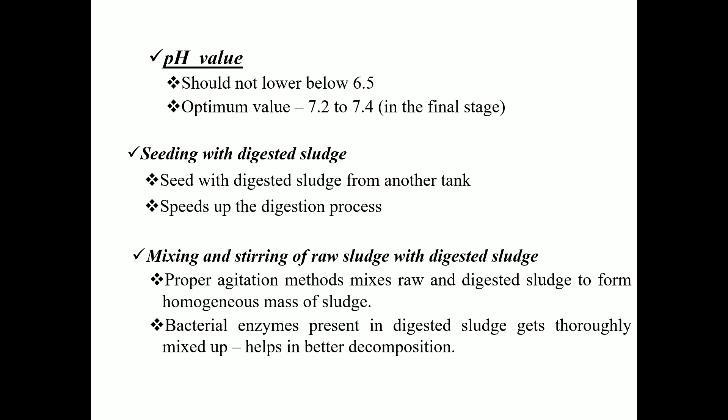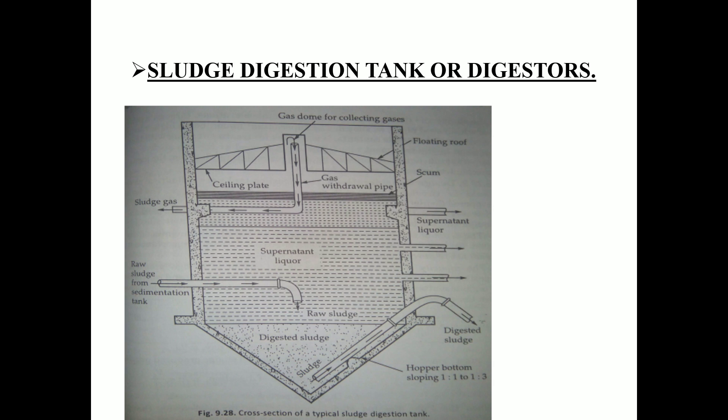The fourth factor is seeding with digested sludge. Already digested sludge is added to fresh raw sludge. The mixture creates a homogeneous mass of sludge, and the bacteria from the digested sludge accelerate decomposition of the fresh sludge.